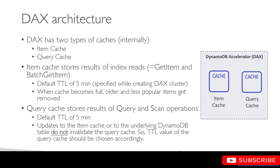So the TTL value of the query cache should be chosen accordingly. If you updated an item in DynamoDB and that updates your item cache, the query cache will not be updated due to that write operation. The query cache will still hold the old or stale copy of the data, and that's why you should really keep the query cache TTL low, so you do not end up reading stale data.